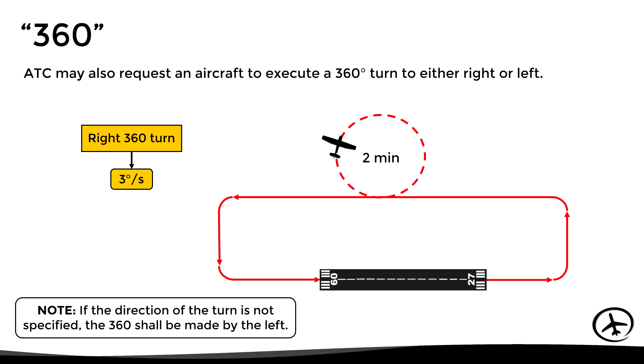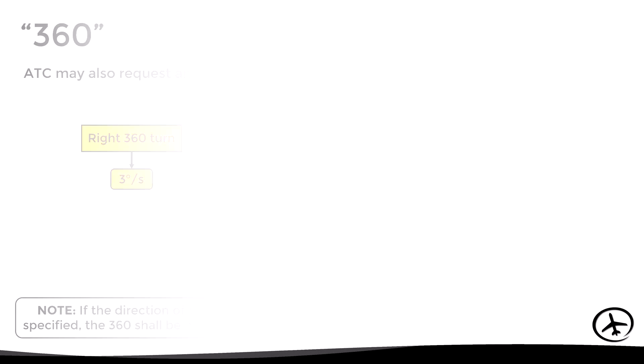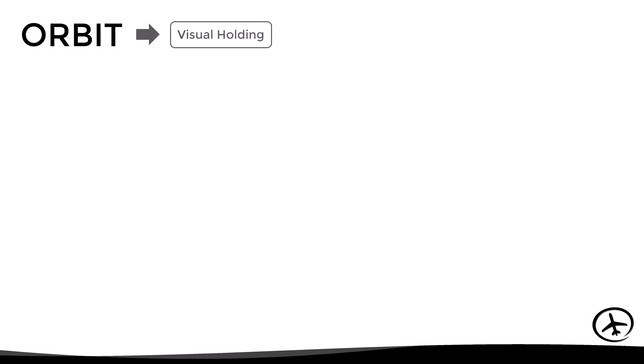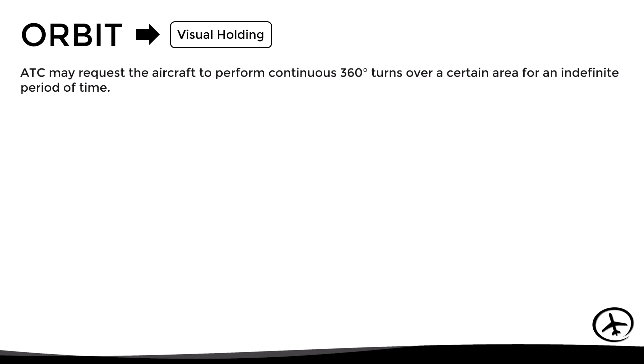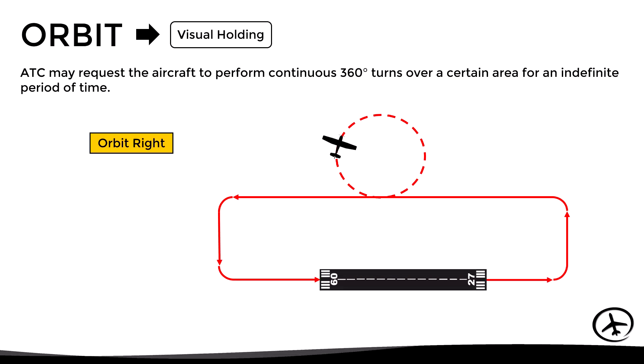Another similar maneuver is an orbit, also known as a visual holding. It consists of making continuous 360-degree turns over a certain area until ATC tells the aircraft to stop. In essence, the way the turns are made is exactly the same as with the 360.